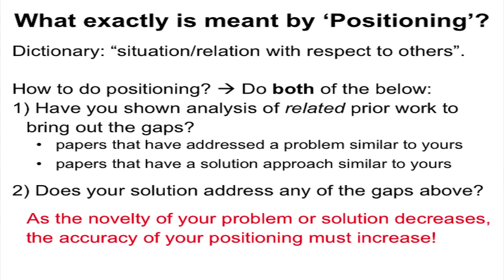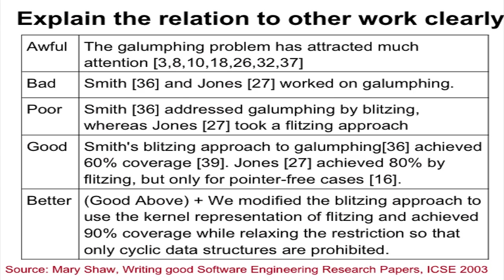The key point here is that as the novelty of your problem or solution decreases, the accuracy of your positioning must increase. If you do not have a high degree of novelty and you do not have accurate positioning, the chances of getting accepted are very low. To ensure accuracy of positioning, recall from the previous session — you want to be able to explain the relation to other work clearly. We saw categories ranging from awful positioning to good positioning to desirable positioning. We should aim to fall at least in the good category, being able to compare with existing prior work, say what is slightly different in what we are doing, how much improvement we are getting, and what that prior work cannot do that ours can.